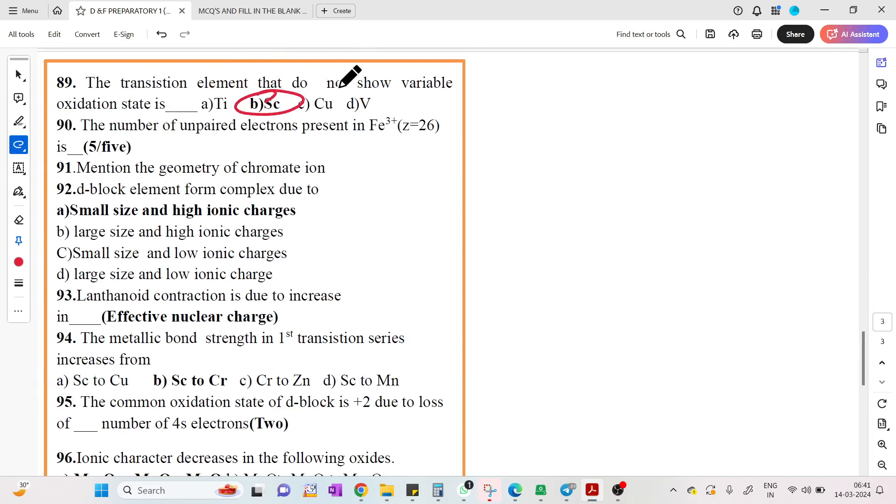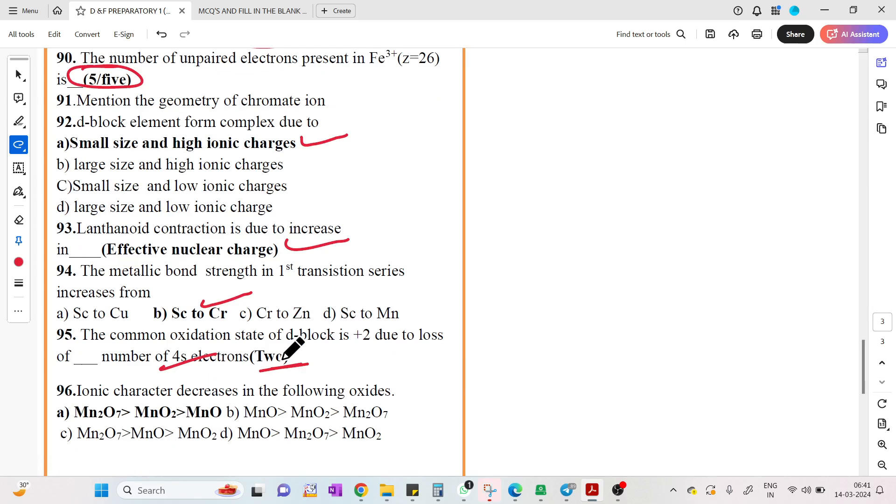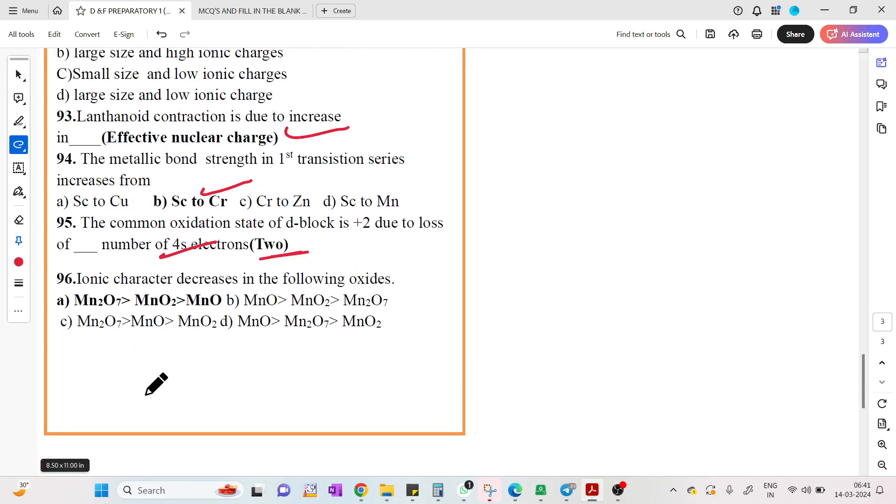Transition element that does not show variable oxidation state: Scandium, even at JEE level. Number of unpaired electrons in Fe3+ is 5. D-block elements form complexes due to small size and high ionic charge. Lanthanide contraction is due to increase in effective nuclear charge. Metallic bond strength in first transition series increases from scandium to chromium.